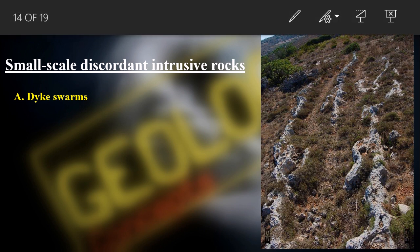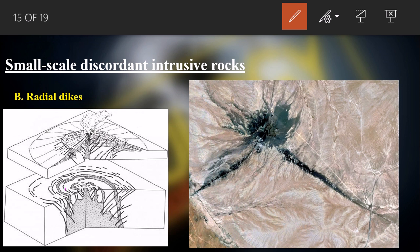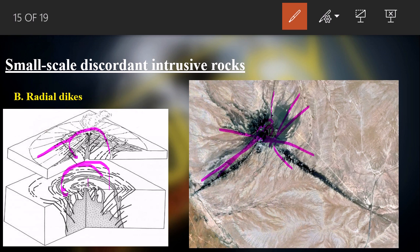Also discordant, we have dike swarms — a variant where many dikes occur at one place. We also have radial dikes, which are vertically dipping but circular in shape, moving outward from a central point like spokes of a wheel, running away from the center of a volcano. These are called radial or radiating dikes.